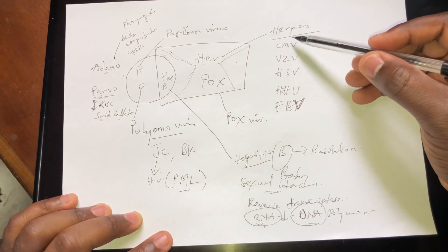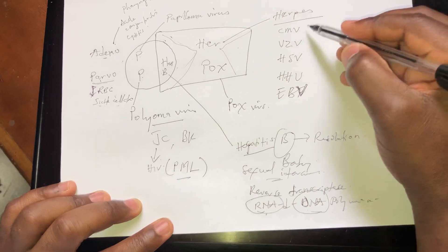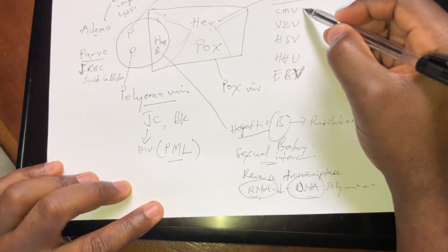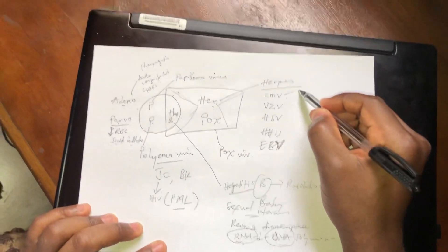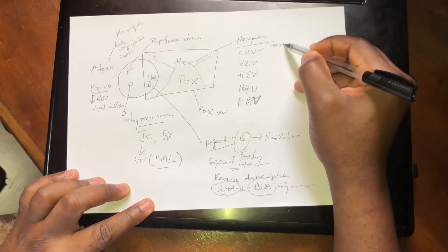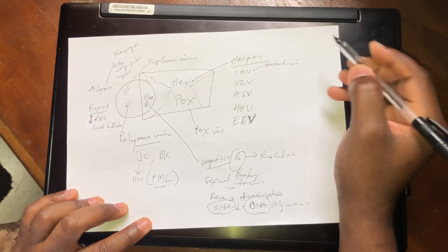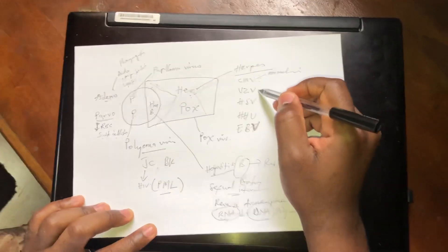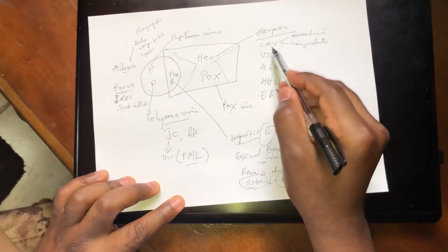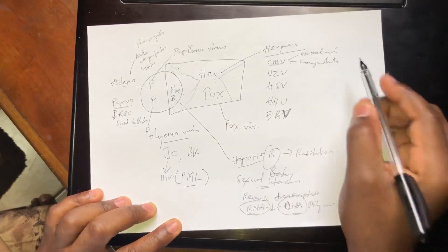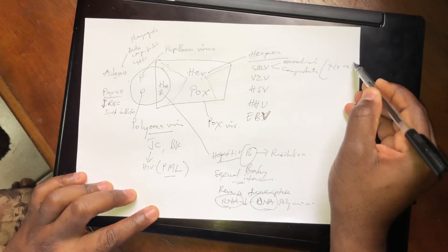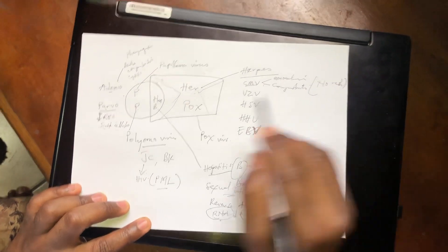Now let's go to the herpes viruses. All these herpes viruses are enveloped. The first one is CMV — it can cause infectious mononucleosis and conjunctivitis. One thing you should know about CMV is that even though it can cause conjunctivitis and other things, CMV infection has no rash. It's measles that will have a rash, but CMV has no rash.